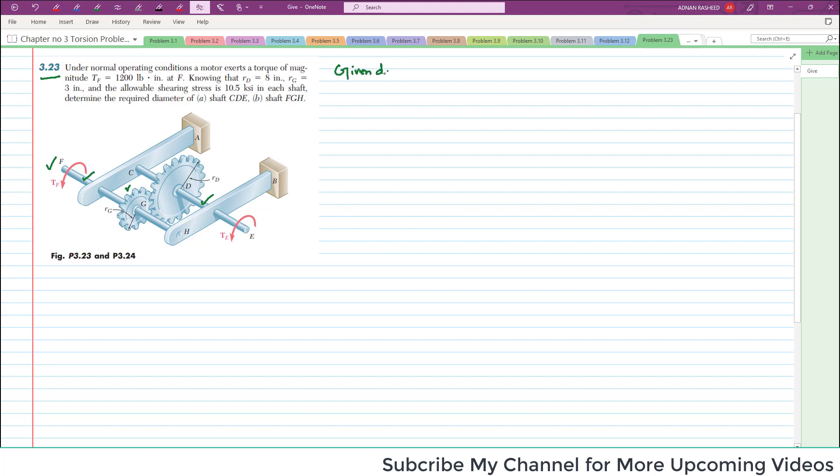In given data we have torque at point F is equal to 1200 pound-inch. Maximum allowable stress is equal to 10.5 KSI for both shafts. Also RG equals 3 inch and RD equals 8 inch. We have to find the first part, diameter of shaft CDE, and part B is diameter of shaft FGH.